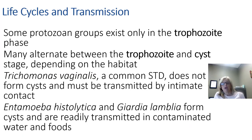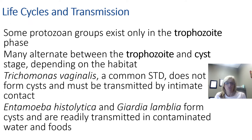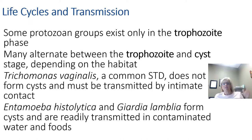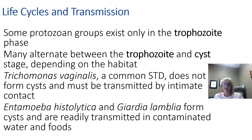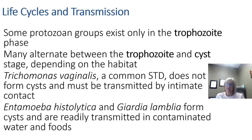The life cycles of protozoans vary from very simple to complex. Several protozoan groups exist only in the trophozoite phase, while some can alternate between trophozoites and cysts. You should start making flashcards of these and keeping records so you can add information as we go rather than trying to learn everything at the end. One important example is Trichomonas vaginalis, a common sexually transmitted infection that does not form cysts and must be transmitted via intimate contact — sex. We also have Entamoeba histolytica and Giardia lamblia, which both form cysts and are easily transmitted by contaminated foods and water.